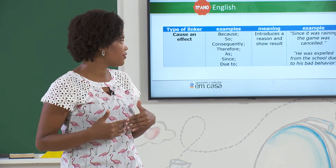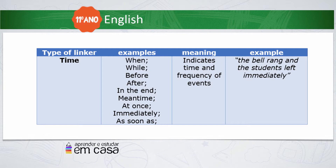But what if we want to talk about time, or indicate the time and frequency of an event? Of course, we use linkers of time. We have: when, while, before, after, in the end, meantime, at once, immediately, as soon as. They indicate time and frequency of events. For example: 'The bell rang and the students left immediately.'